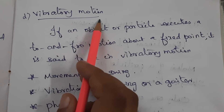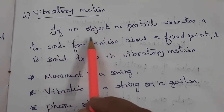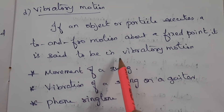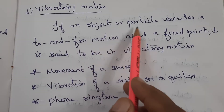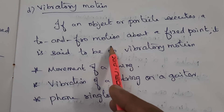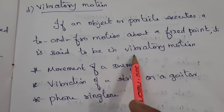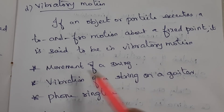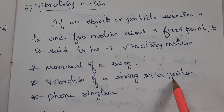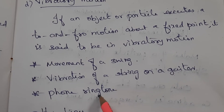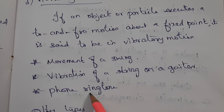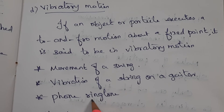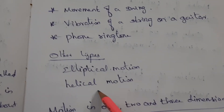Next, vibratory motion. If an object or particle executes a to-and-fro motion about a fixed point, it is said to be in vibratory motion. Examples: movement of a swing, vibration of a guitar string, and the vibration of a phone ringtone. Other types of motion also exist, such as elliptical motion and helical motion.